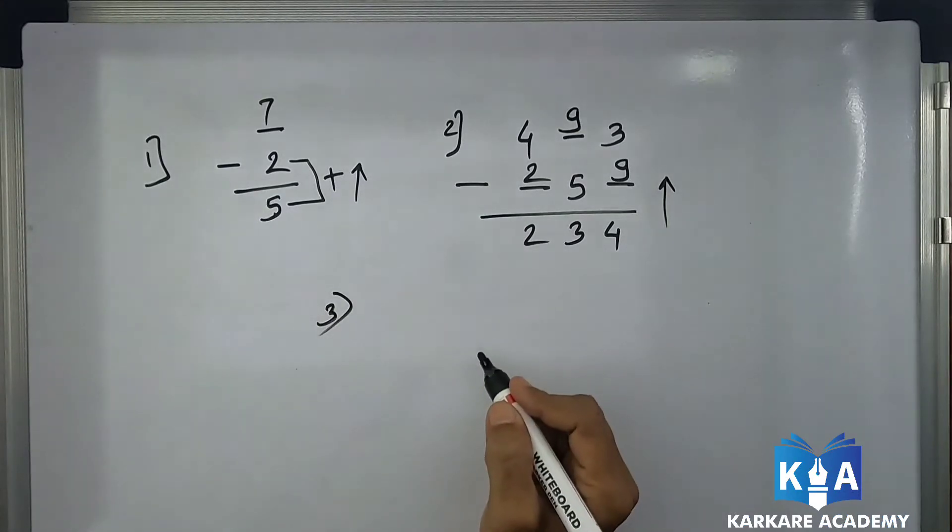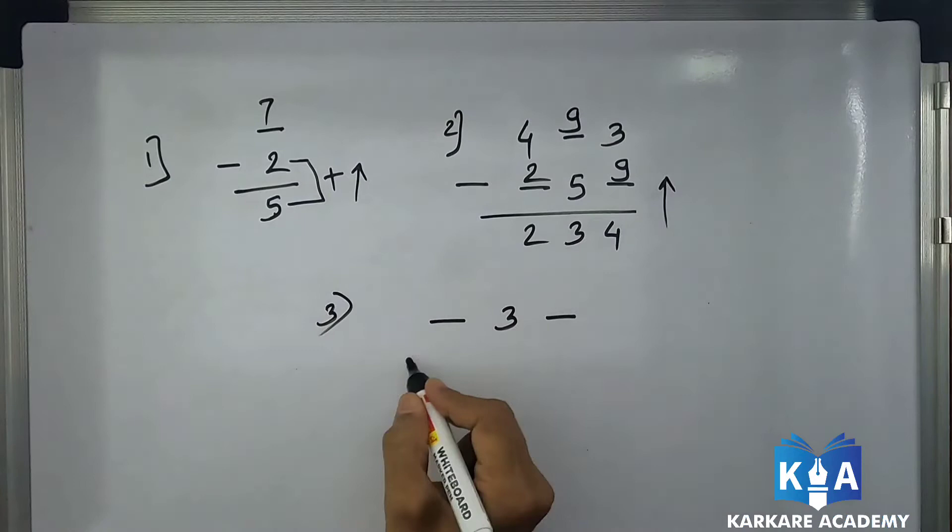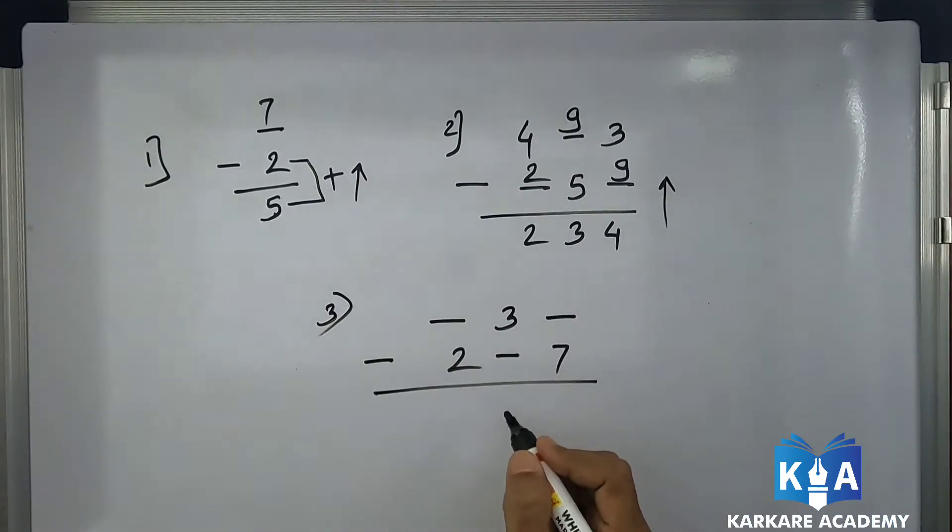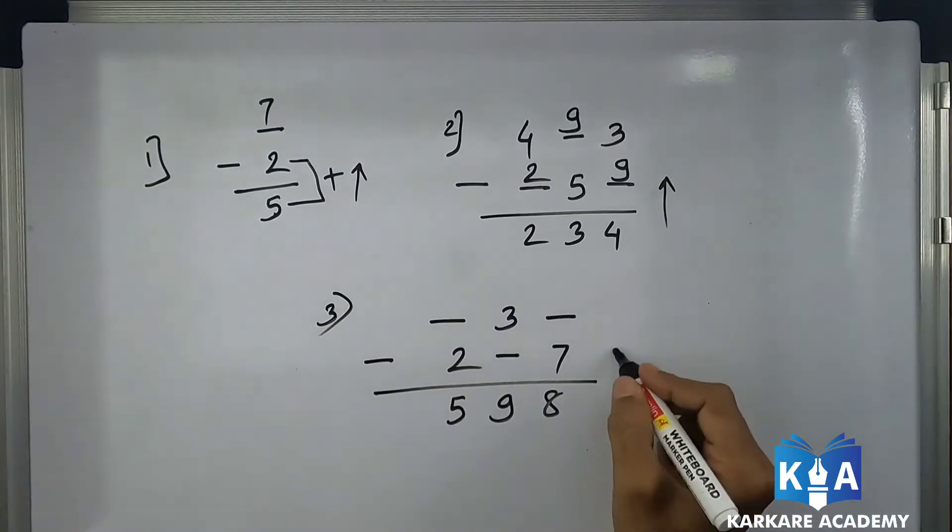This is dash 3 dash minus 2 dash 7, and the answer of this one is 598. Now pay attention how to solve this one. Again, subtraction by addition method, from bottom to top.